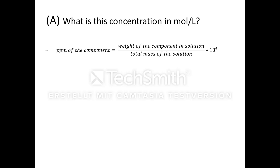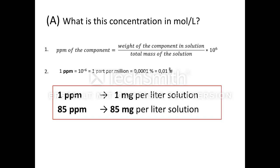Now we take a look at the second possibility to interpret ppm. One ppm means one part per million, that's 0.0001%. I prefer the second interpretation because the conversion into milligram per liter is easier. One ppm means one milligram per one liter solution. So 85 ppm oxygen are 85 milligram oxygen per one liter soft drink.